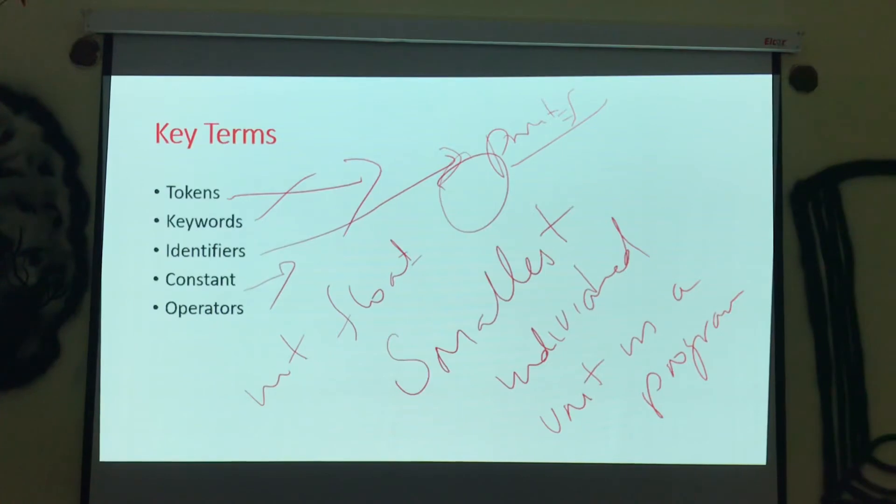And constants, we all know. For example, we are writing like int a is equal to 2. Integer is what data type, keyword, a is a variable, 2 is nothing but a number. So that is a constant. Operator. Yes, we will use a lot of operators like plus, minus, division, multiplication, everything. That is something about operators.